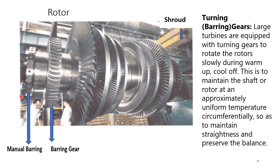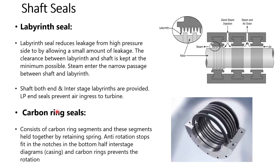The rotor is provided with a manual barring arrangement as well as a barring gear to rotate the turbine slowly during startup for uniform heating, and also when the turbine is shut down to cool it to a safe level. This is done to avoid bending of the shaft and to maintain the straightness of the shaft.